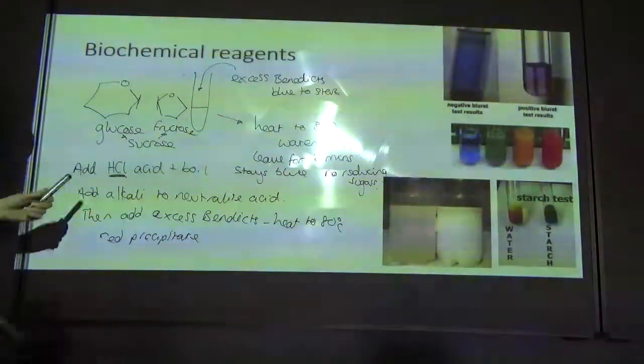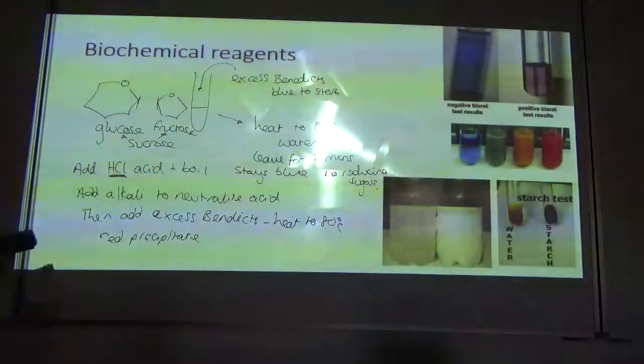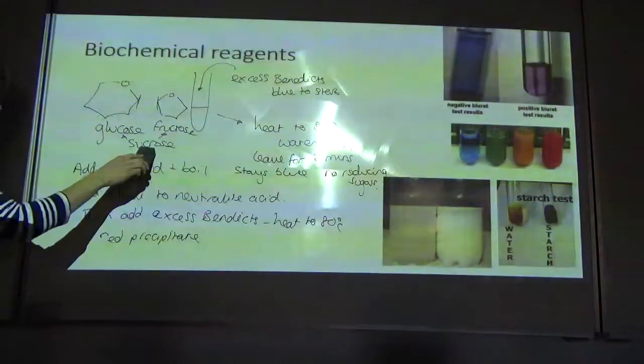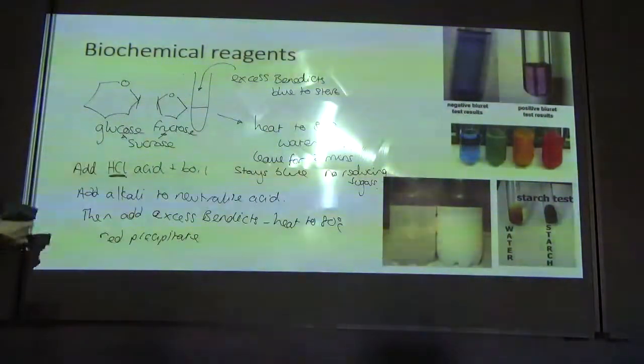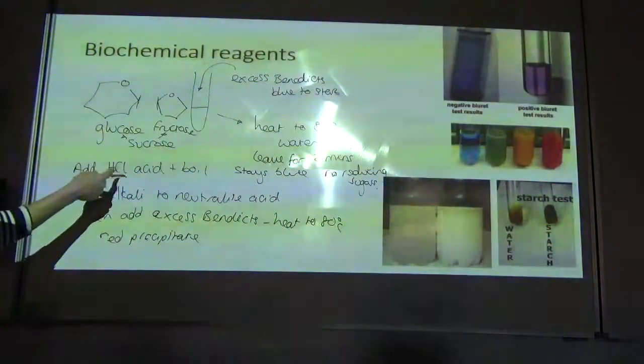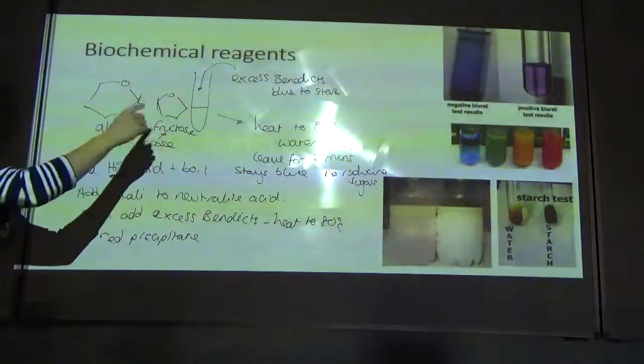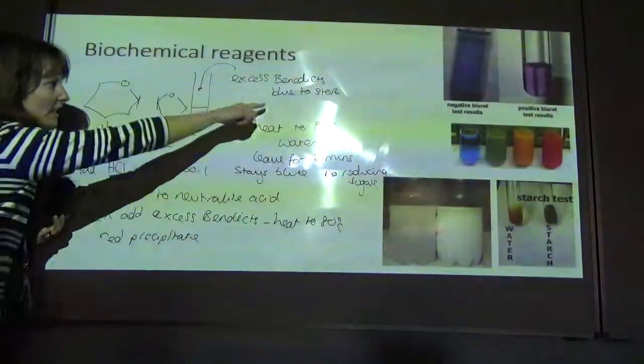Another thing that you could do instead, if you didn't have the acid and you didn't have the alkali, is you could add an enzyme, say sucrase, to the solution. So you would test, first of all, sucrose with the Benedict's. It would stay blue because it's a non-reducing sugar. Then you would add your sucrase enzyme, and then you would carry out the full Benedict's test with this.